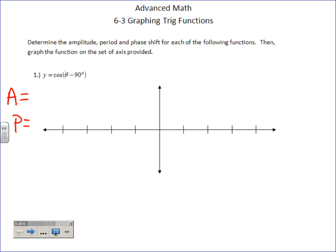Amplitude, period, phase shift — here's how I'm going to write them. Amplitude: one. Remember, it's that number out front, which happens to be a one, meaning the graph is going to go up one and down one from the middle. Period: cosine's normal period is 360. You were taught to have the angle in the form one-theta, so you divide by that one and it's 360.